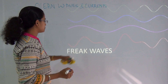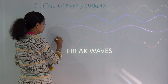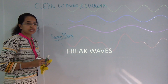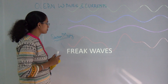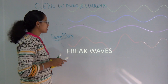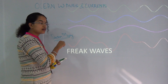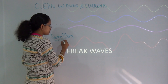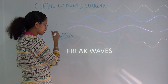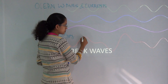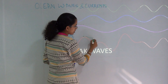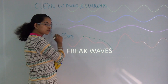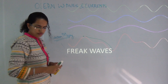A classic example of freak waves was the incident of the Queen Mary ship, which was carrying around 15,000 Europeans and had a hair's-breadth escape. Otherwise, this could have been a disaster much more severe than the Titanic. Due to the freak waves in the ocean at that time, the ship was at one height and there was a deep trough — those were very high waves.